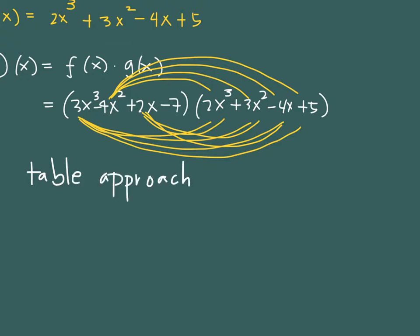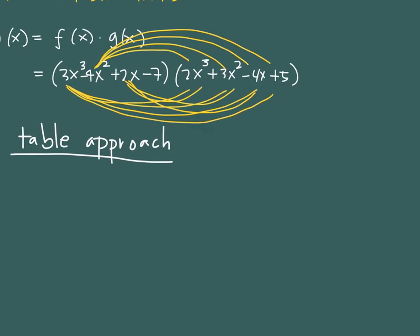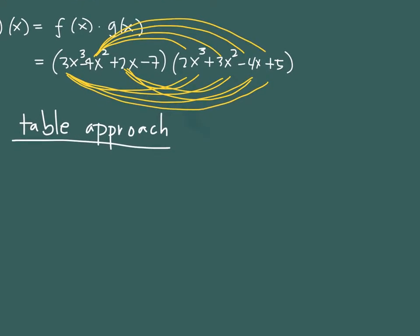Some textbooks might use a different name for it, but we call it table because we will be tabulating the product of the terms. So in the table approach, what you can do is to create something like this. Then place the terms of the two functions. You can place the f(x) on top. So when it's positive, just write the number. So you have 3x³. When it's a negative or minus sign, you carry that sign.